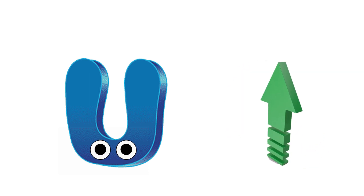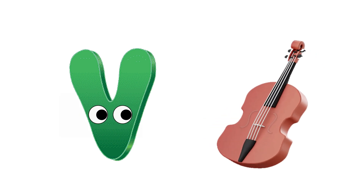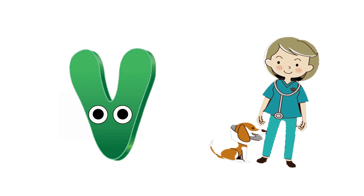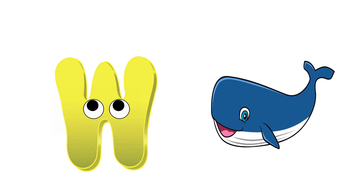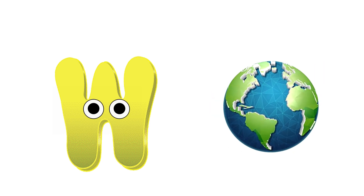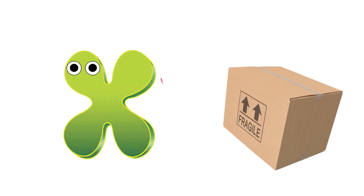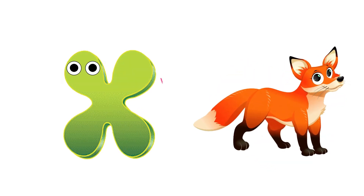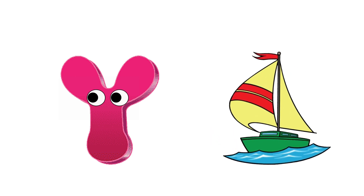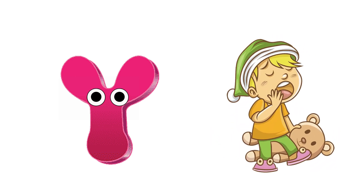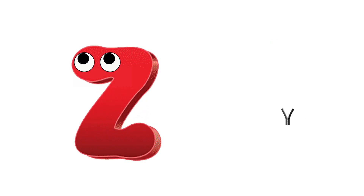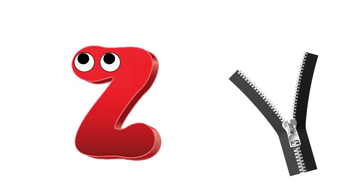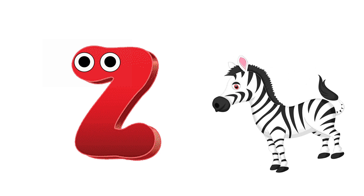U is for umbrella, u, u, umbrella. U is for up, u, u, up. V is for violin, v, v, violin. V is for vet, v, v, vet. W is for whale, w, w, whale. W is for world, w, w, world. X is for box, x, x, box. X is for fox, x, x, fox. Y is for yacht, y, y, yacht. Y is for yawn, y, y, yawn. Z is for zebra, z, z, zebra. Z is for zip, z, z, zip.